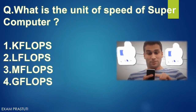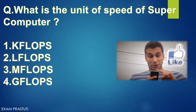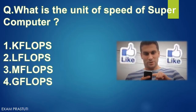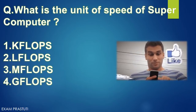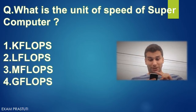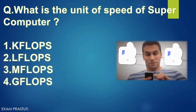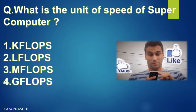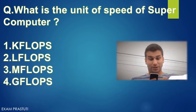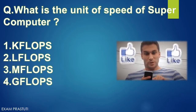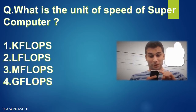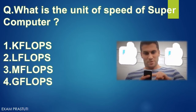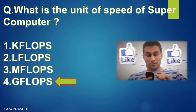What is the unit of speed of a supercomputer? The unit of speed for a supercomputer is option number 4 — ZFLOPS.